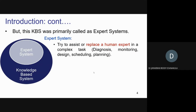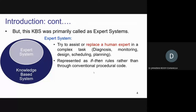An expert system tries to assist or replace a human expert in a complex task. That expert system — also a program just like KBS — gives a solution to the operator based on experience. If an operator has a problem, the system checks what the solution should be based on history. It searches for the solution from past occurrences and gives it to the operator. So it just behaves like an experienced person.